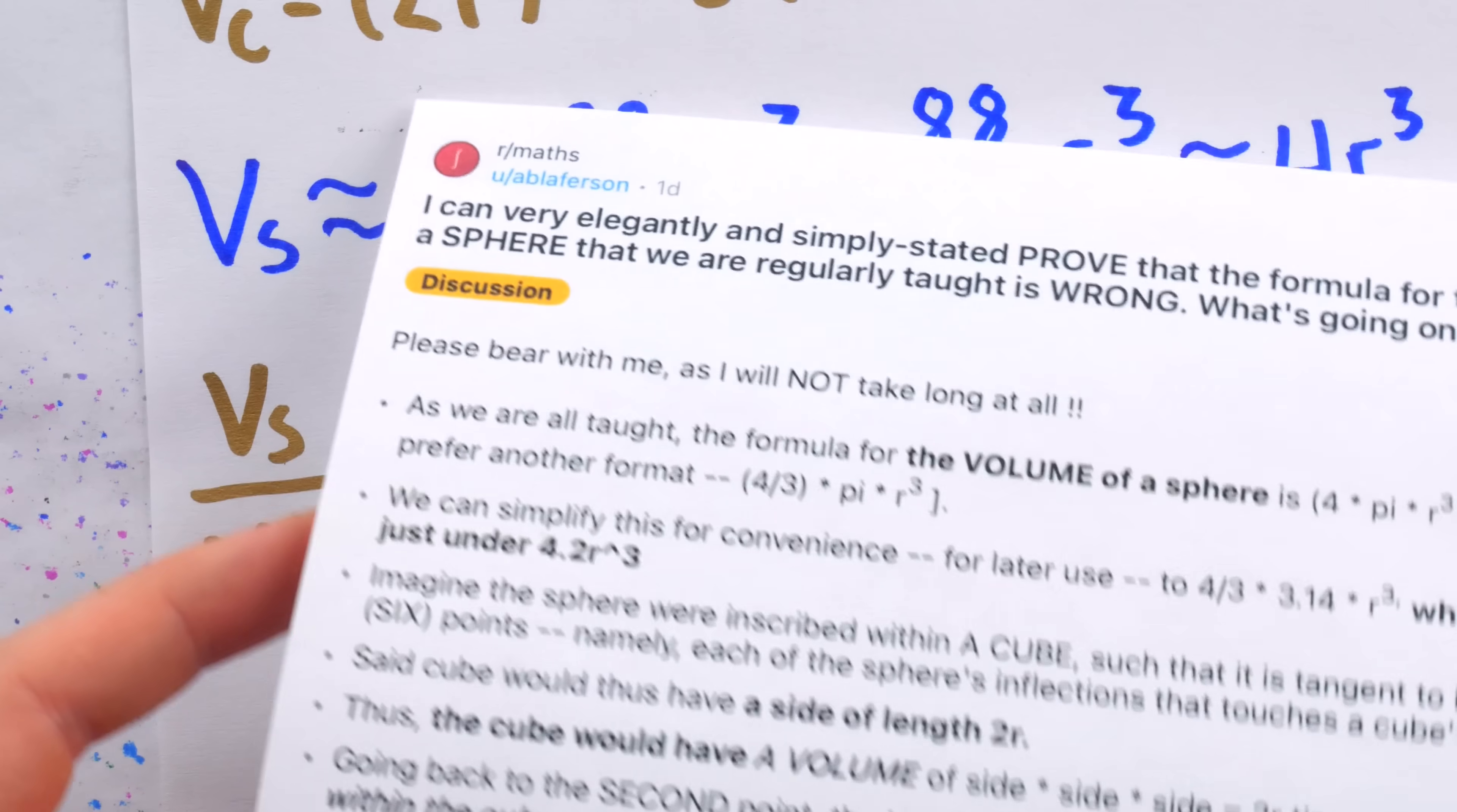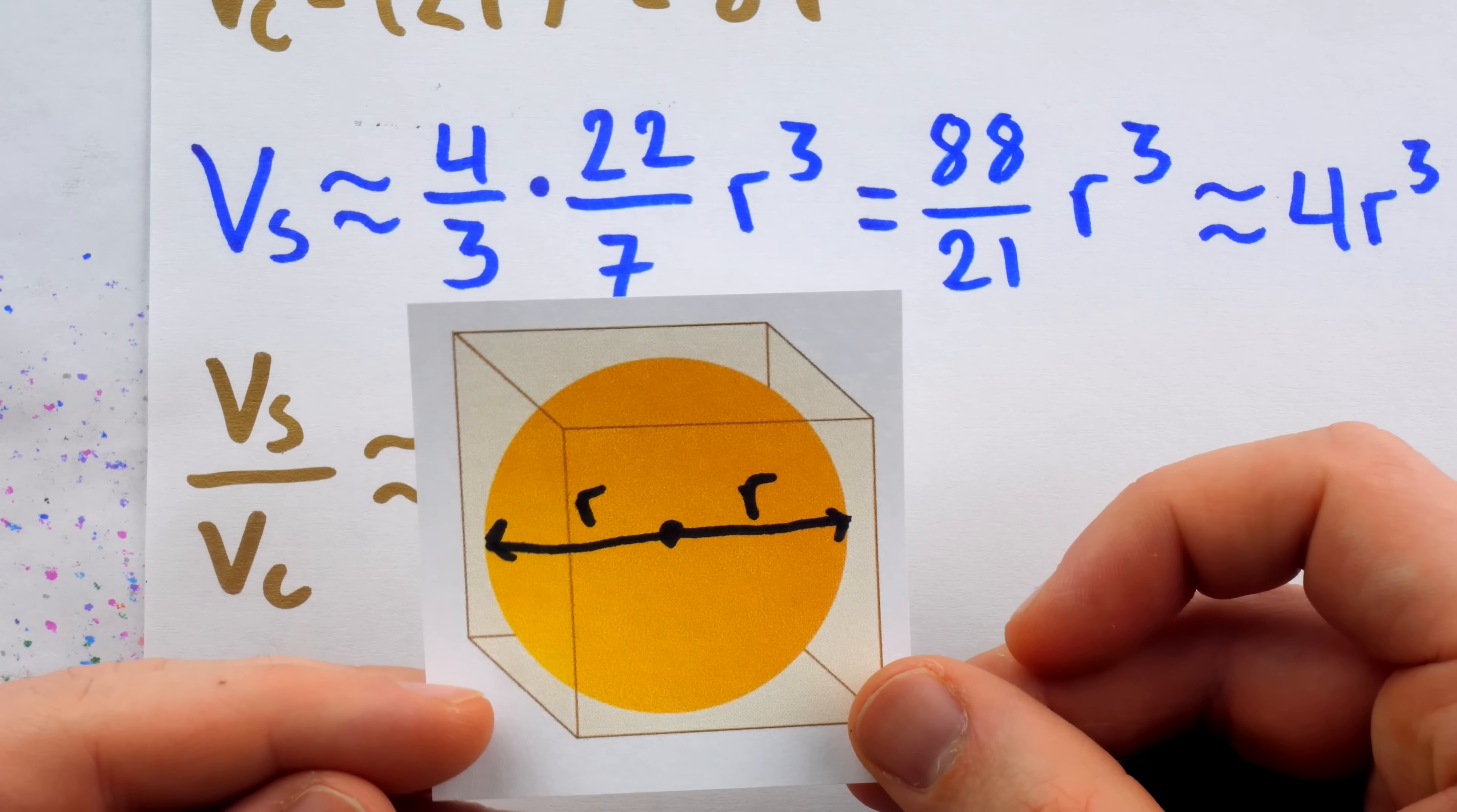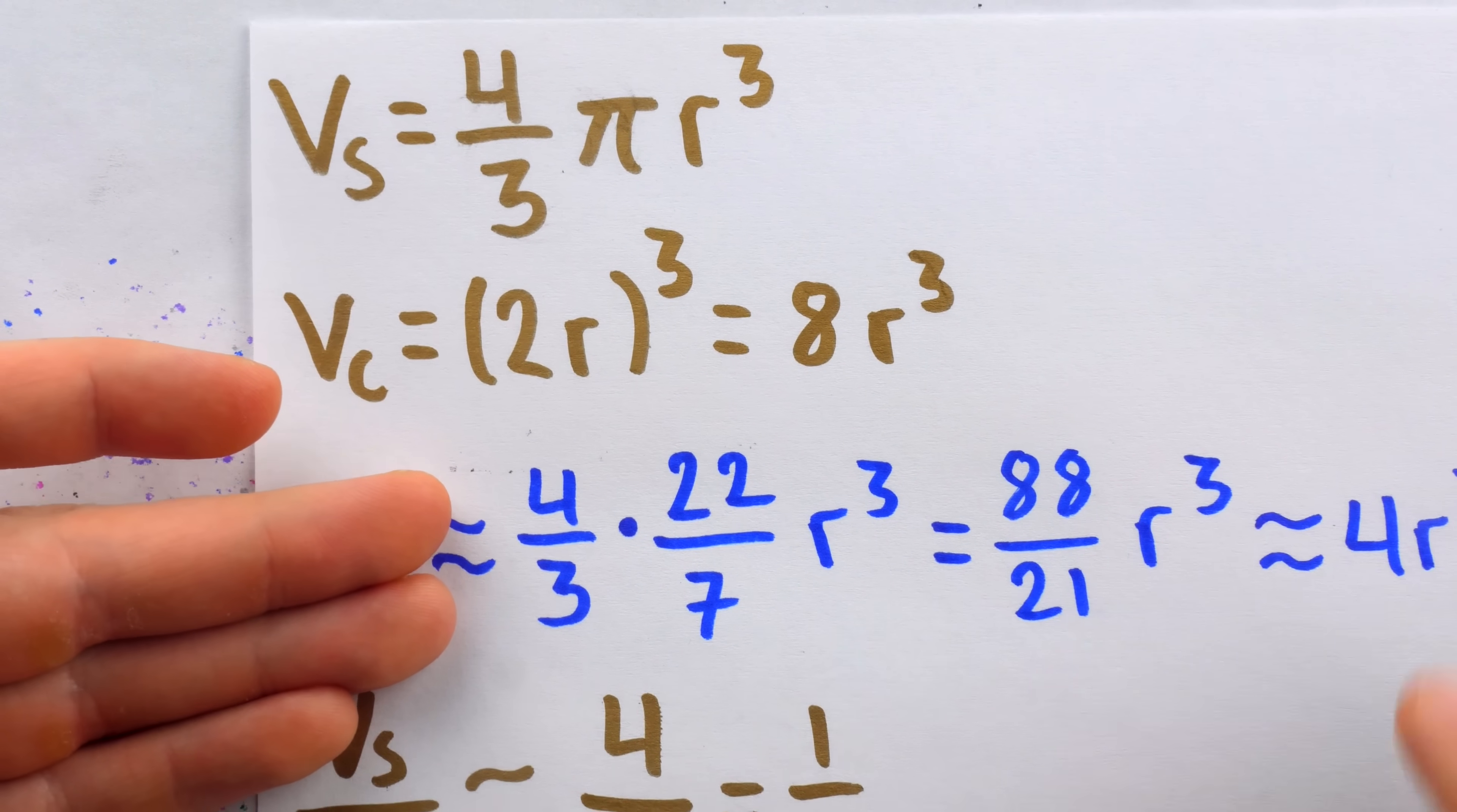This is the mathematically sound argument our esteemed Redditor makes. You can see here he's saying how the sphere inscribed would be about half the volume. However, we have erred, for it should be immediately obvious that this cannot possibly be the case. And to figure that out, you just have to look at the picture, which is a picture to the sphere inscribed in the cube. Just look at it. Clearly, the sphere occupies a much larger volume than just half of the cube.